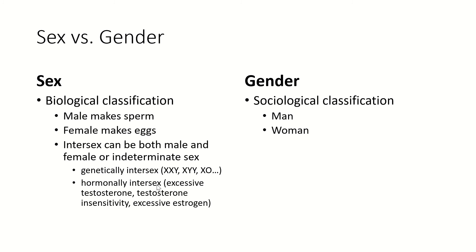There are also hormonal ways that people can be intersex: excessive testosterone in a female, or testosterone insensitivity in a genetic male. If you have XY chromosomes but your cells can't respond to testosterone, you will develop into an absolutely perfectly normal and biologically reproductively normal female, even though you are genetically male. Excessive estrogen in a male can also cause intersex. There are also people who, because of abnormalities during fetal development, are simply born with both parts — so you could be genetically XY but have a clitoris, testes, and a uterus.